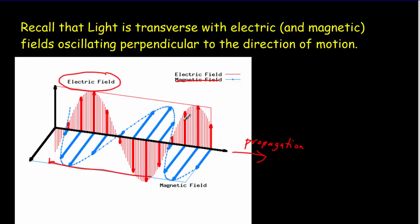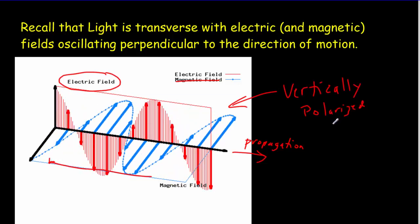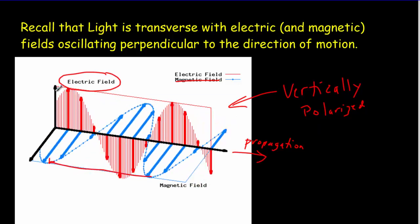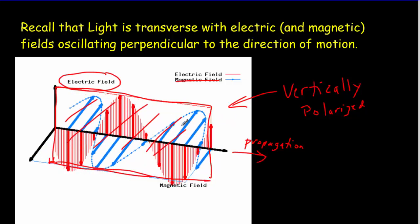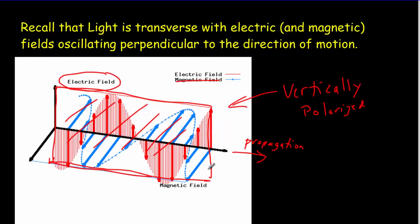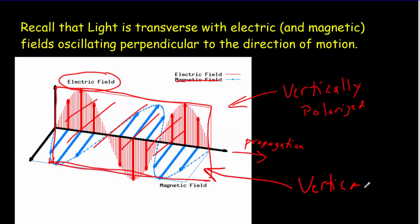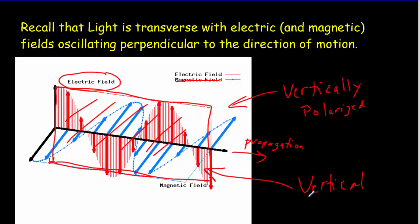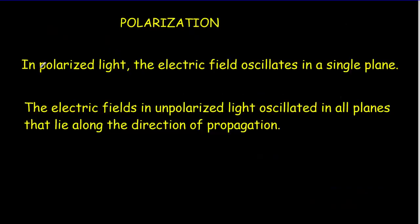This particular wave we would say is vertically polarized. The reason we know it's vertically polarized is that if I draw a vertical plane right here, all of the oscillations of the electric field are contained inside that vertical plane. So because we've got a vertical plane that contains all the electrical field oscillations, we call that a vertically polarized wave. Anytime we've got polarized light, the electric field oscillations are in a single plane.